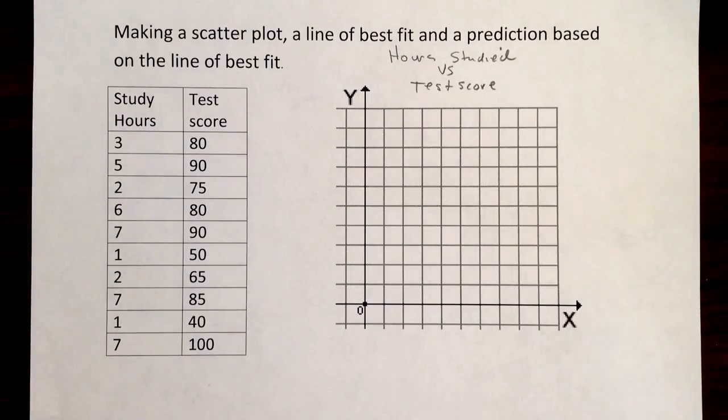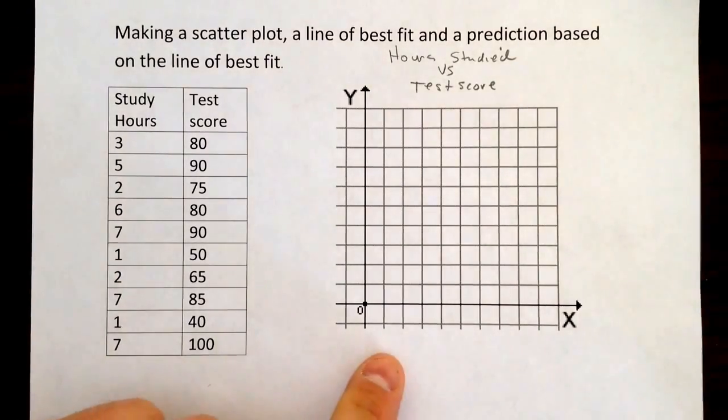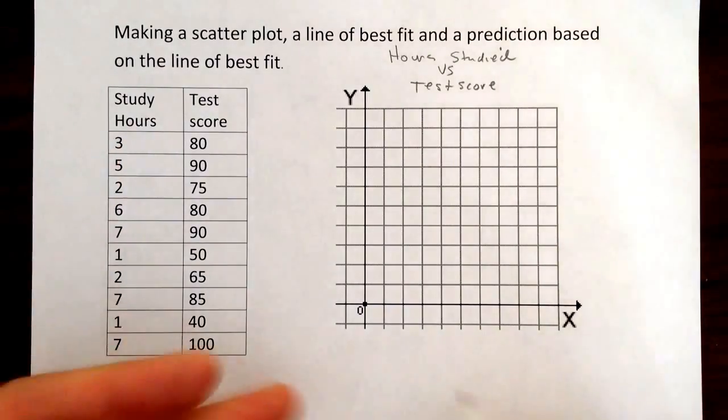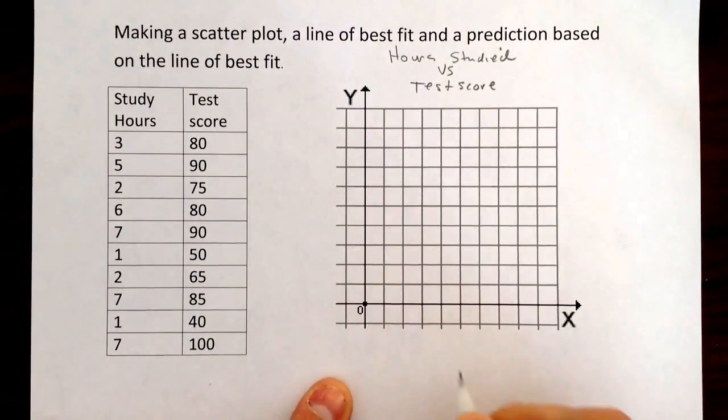And then after that, we're going to start graphing this after we get some kind of a scale here. So let's see here. We'll go with study hours first. That's over here. Usually time is on the bottom, so that makes sense. So hours studied, or I'm going to say study hours.